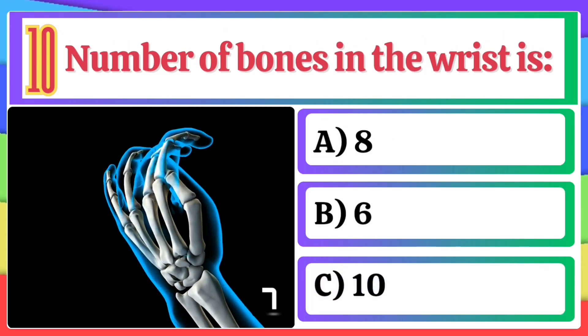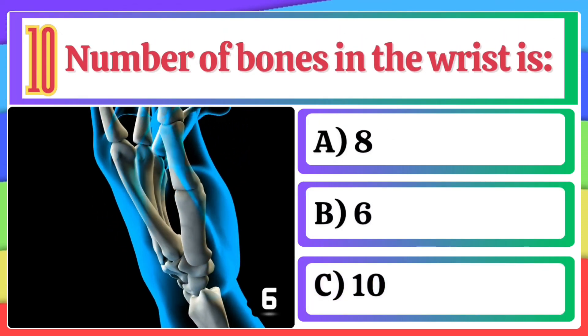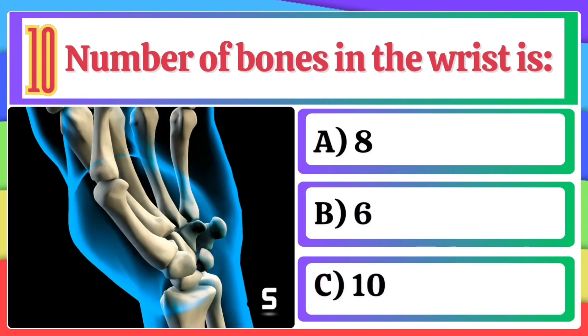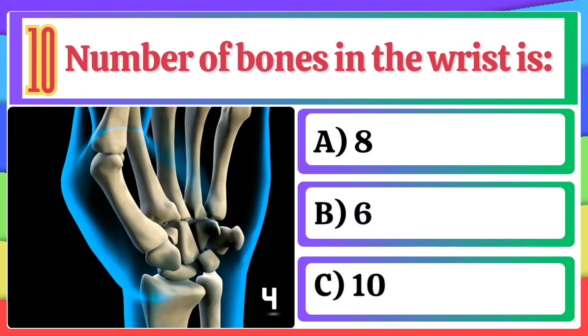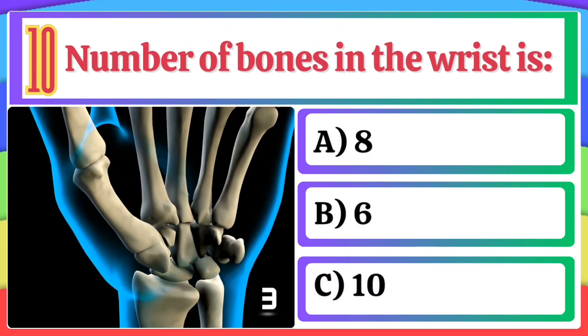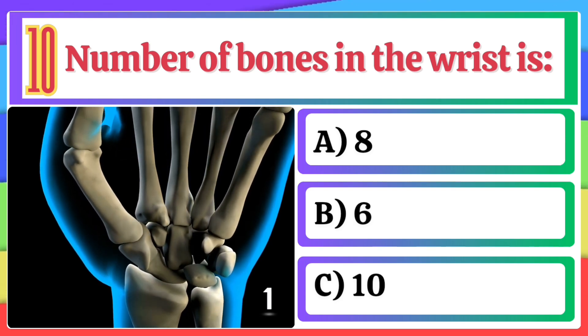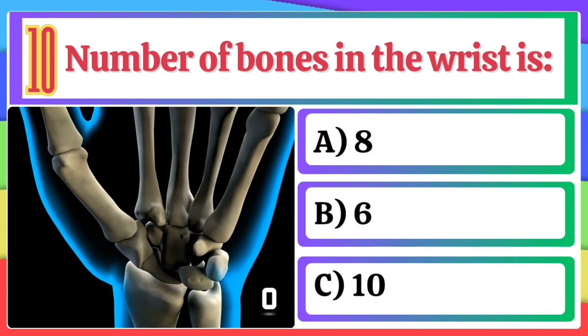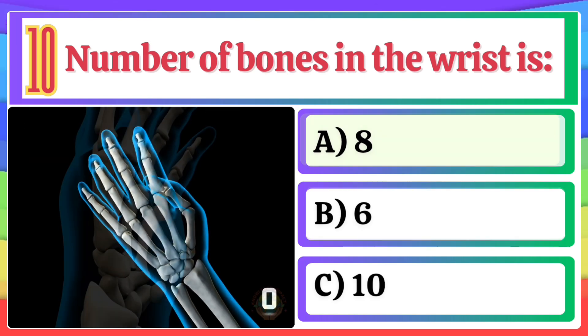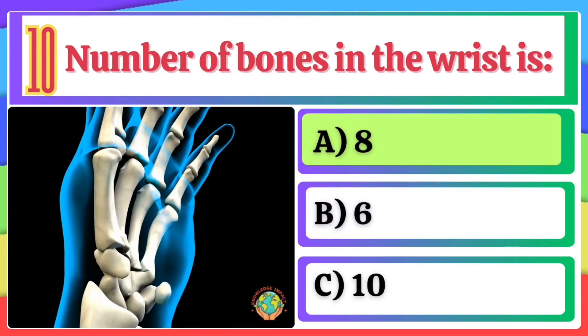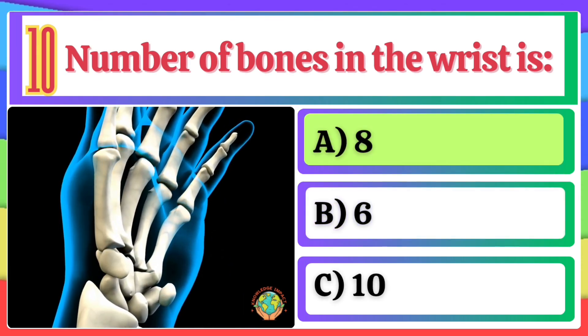Number of bones in the wrist is: A) 8, B) 6, C) 10. The correct option is A, 8.